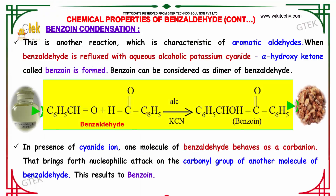Now let us study benzoin condensation. In benzoin condensation, aromatic aldehydes show characteristic properties. When benzaldehyde is refluxed with alcoholic potassium cyanide, it forms an alpha hydroxy ketone called benzoin. Benzoin is nothing but a dimer of benzaldehyde.